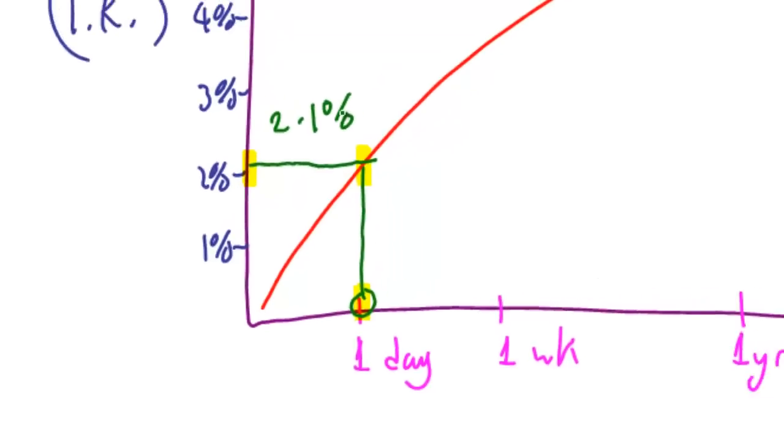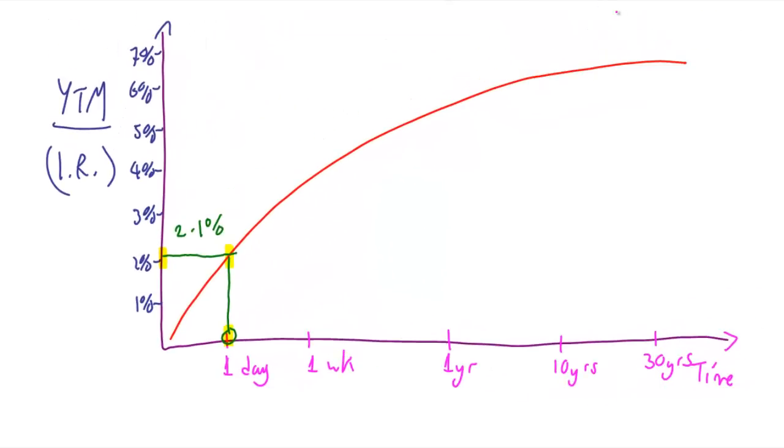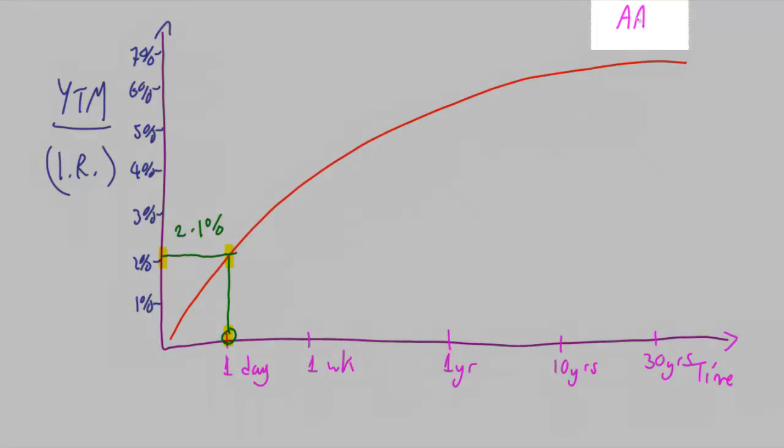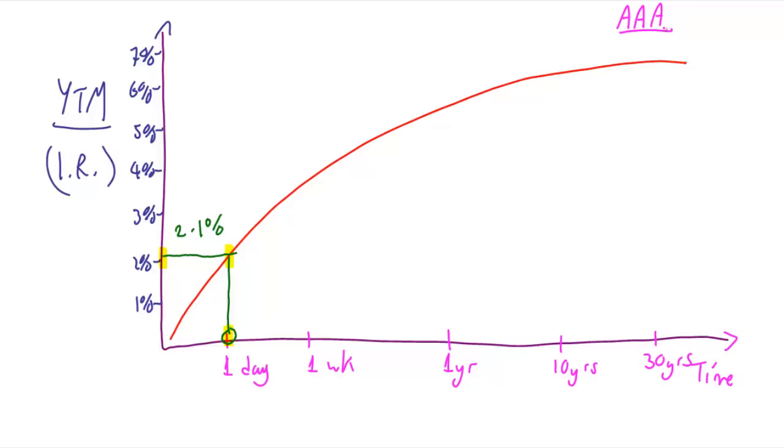So, if you want to borrow money from me for one day, that's going to cost you 2.1%. Now, just before we carry on, we're going to assume that this is an AAA rated situation. There are different yield curves for different credit risks, and we'll talk about that in a couple of lectures. But let's just assume for one moment that we're all on the same yield curve.